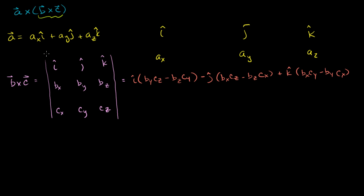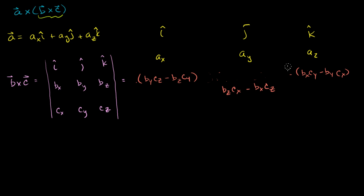Looking at the j term: it's a minus j times (bx·cz − bz·cx), so I'll swap the signs and write it as bz·cx − bx·cz. That way I can get rid of the minus and the j and just incorporate the sign swap directly into the third row of the matrix.